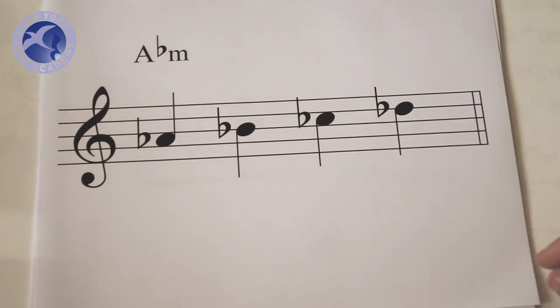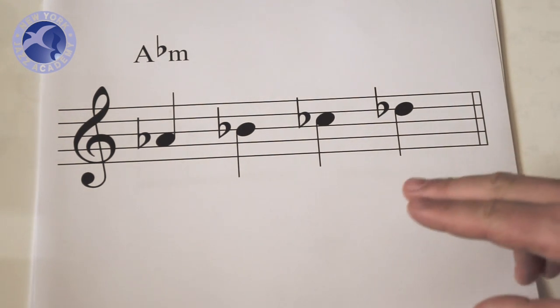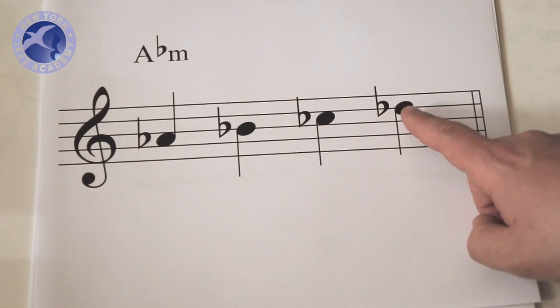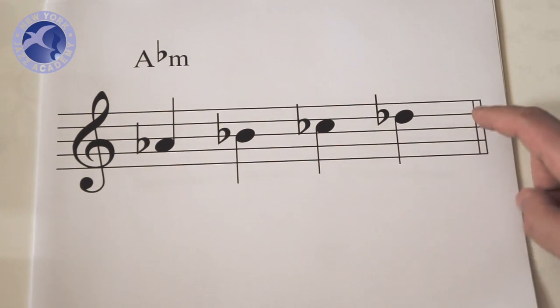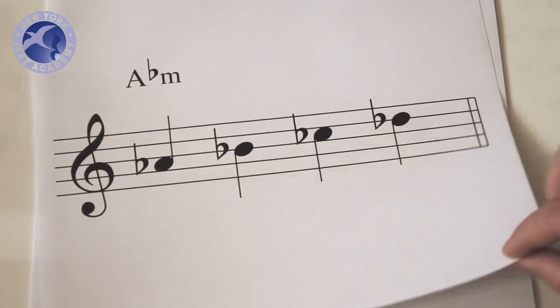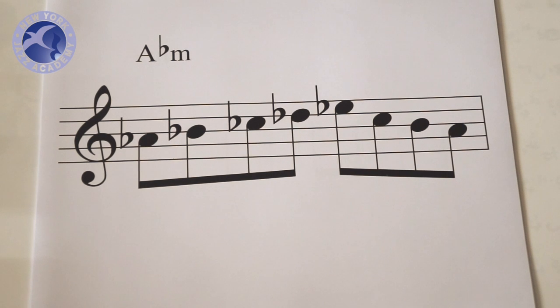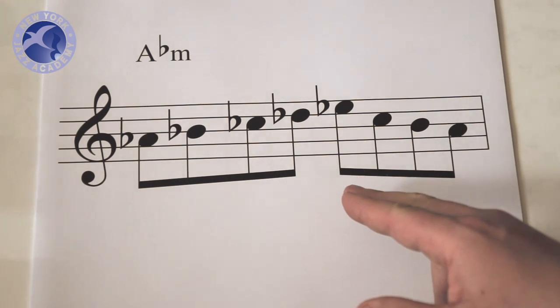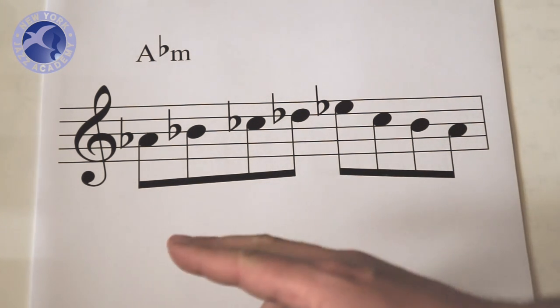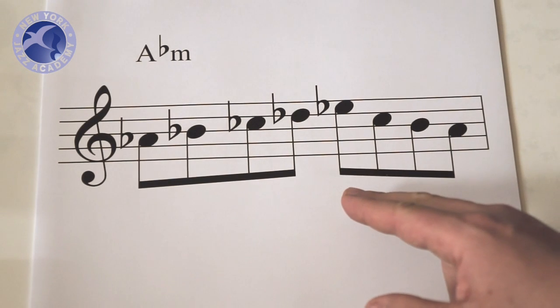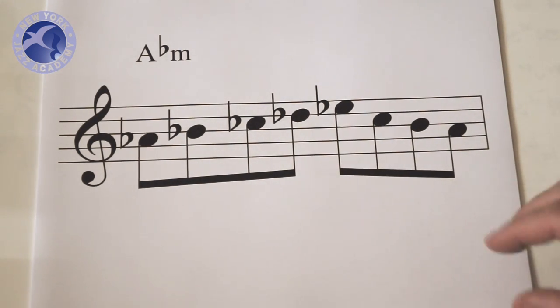If you take this A flat minor and you're using it in a diminished context the note after this D flat is D, but if you extend this up purely in terms of A flat minor itself the fifth of the A flat minor scale is E flat. So now you have a line starting on A flat going up to E flat and coming back to A flat.